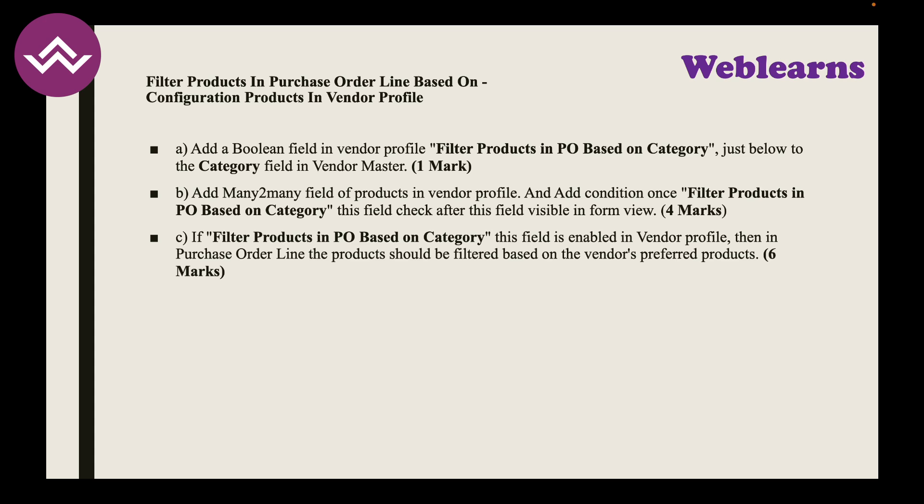Task E: Add a boolean field in the vendor profile named 'Filter Products in PO Based on Category', placed just below the category field. Add a many-to-many field of products in the vendor profile, visible in form view only when that boolean field is checked. When the filter field is enabled, the purchase order line products should be filtered based on the vendor's preferred products. Once done, you achieve six marks.